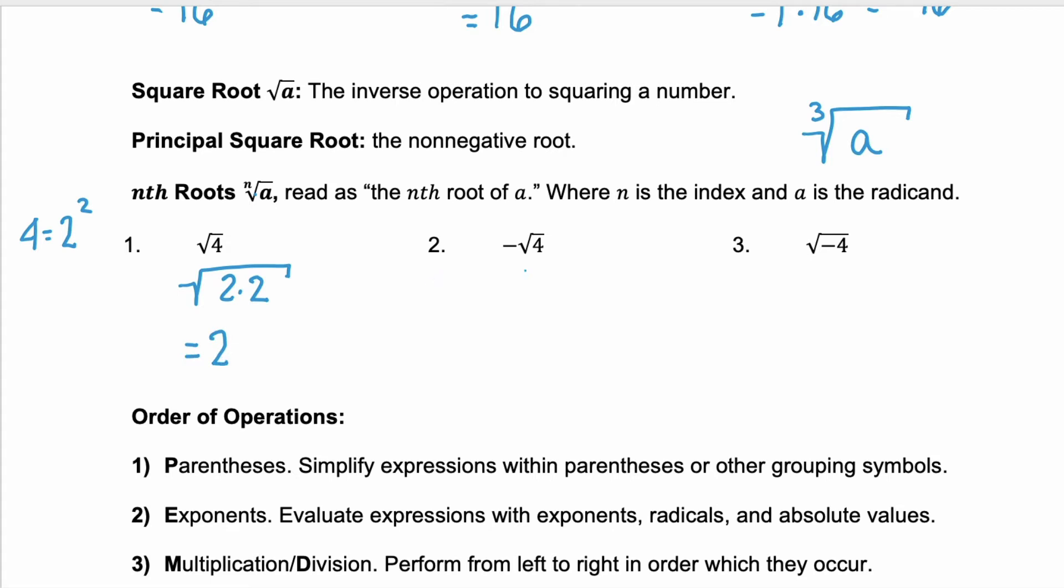Example 2 is telling you what? The negative on the outside, remember that's saying the opposite. So what's the opposite of the square root of 4? Well, the square root of 4 is 2, so the opposite would be negative 2.